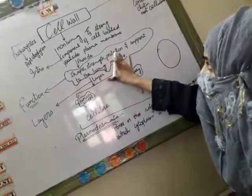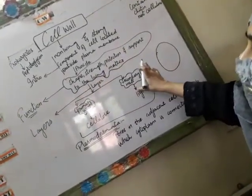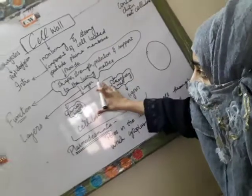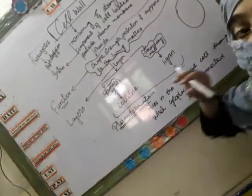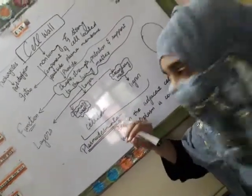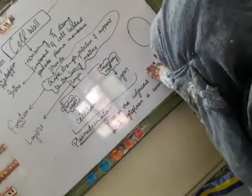It provides shape, strength, protection and support to the plant cell. Now I will tell you about its layers. It has two layers: primary wall and secondary wall. Primary wall contains cellulose and the secondary wall contains lignins.